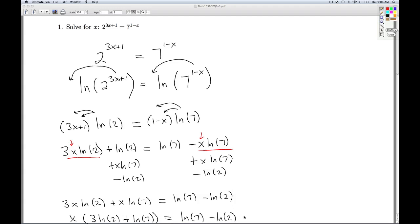And so for the grand finale, I'm going to divide both sides by the coefficient of x. So I'm going to divide both sides by 3 natural log of 2 plus natural log of 7.